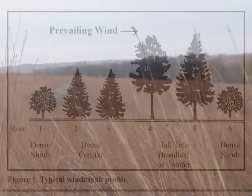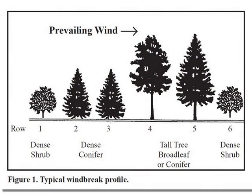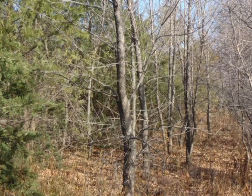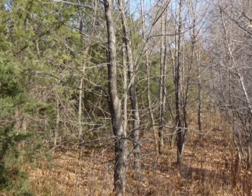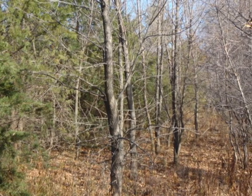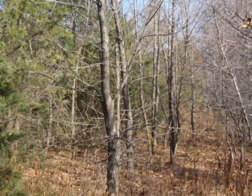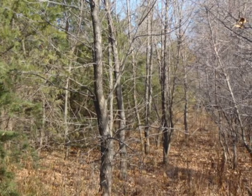A multiple row windbreak should have windward rows of dense conifer trees or shrubs, interior rows of tall broadleaf trees, and leeward rows of shrubs or conifers. Plant a diversity of species to reduce the risk of insect, disease, or environmental problems. The diversity will provide excellent wildlife habitat as well.